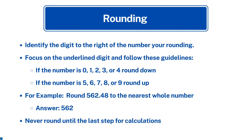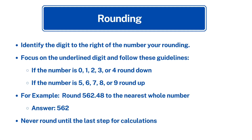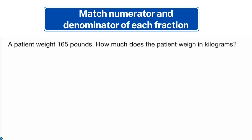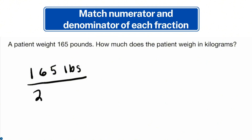Proportions are your best friends when it comes to ensuring precise medication calculations. There are two ways to set up proportions. The first way is to match the numerator and the denominator of each fraction. Let's try it: a patient weighs 165 pounds — how much does the patient weigh in kilograms?